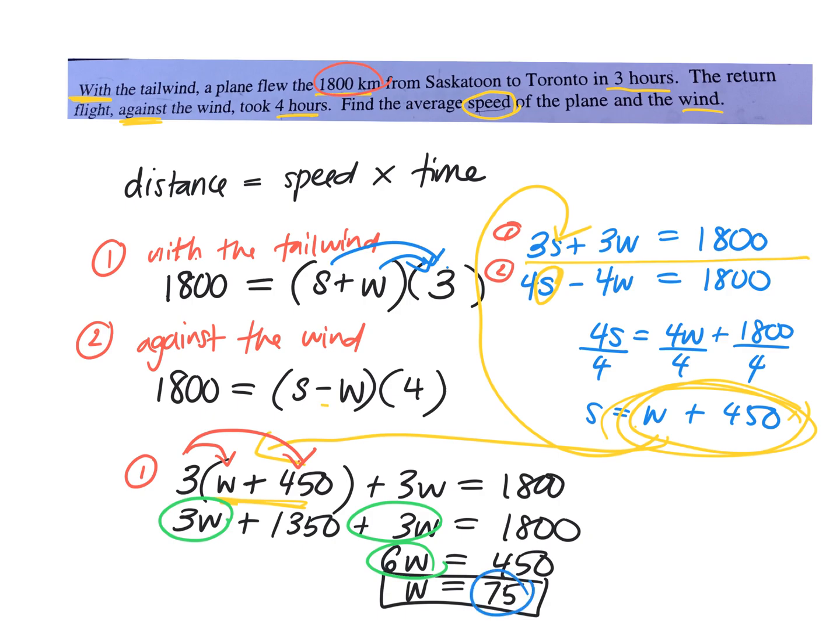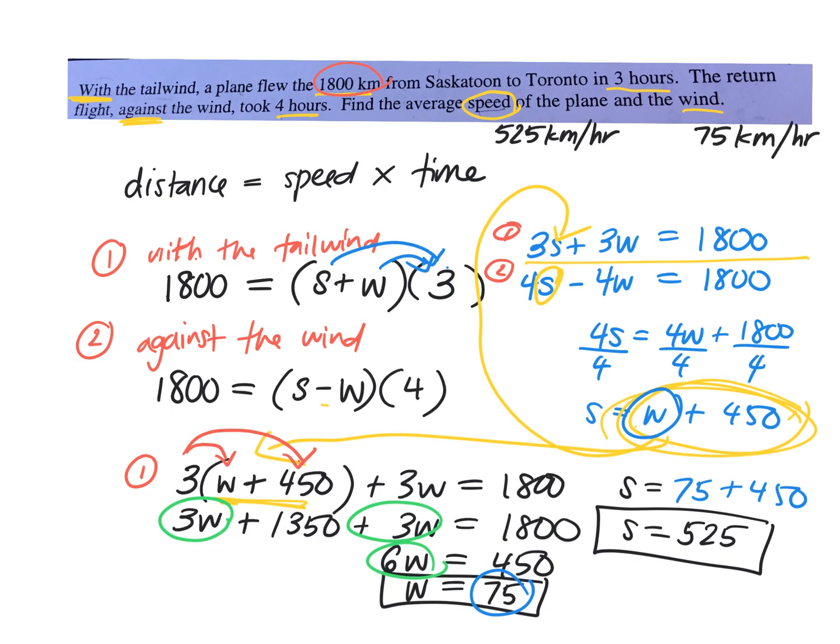Yeah. And then we're going to solve for the other variable. So s is equal to 525. So the speed of the plane is 525 kilometers per hour, and the speed of the wind is what? One second. Okay, 75 kilometers per hour. Let's see if you have the same thing. Yeah, go ahead.